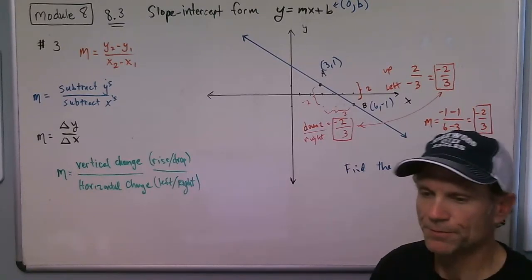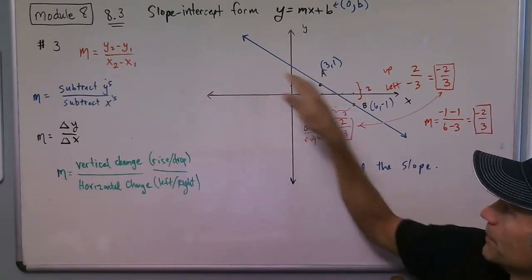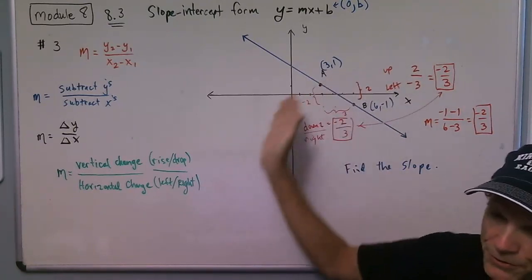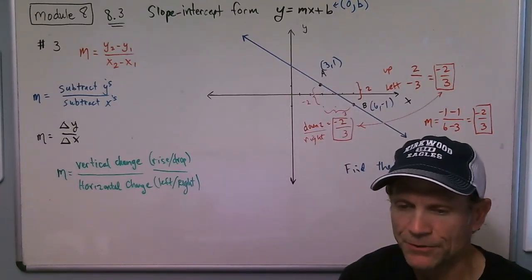Hopefully that helps a bit with slope. So negative slope goes this way, positive slopes go this way. All right. Thank you.